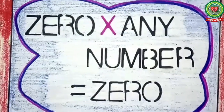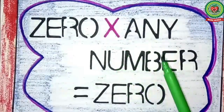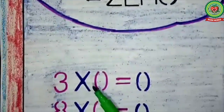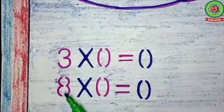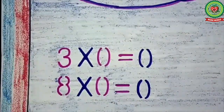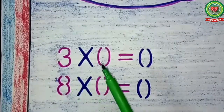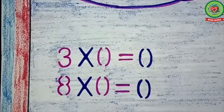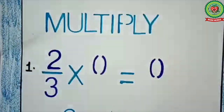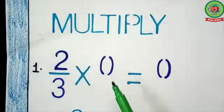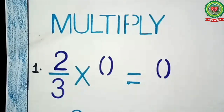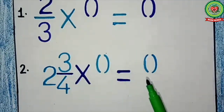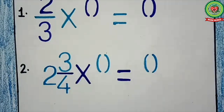Now let's see one more concept. As we have done earlier, if we multiply 0 by any number, the answer will always come 0. If I multiply 3 by 0, answer is 0; 8 by 0, answer is 0. We are multiplying whole numbers by 0 and the answer is always 0. We will apply the same fundamentals to fractions. If I multiply 2 upon 3 by 0, the answer will come 0. And if I multiply 2 whole number 3 upon 4 by 0, answer will come 0.